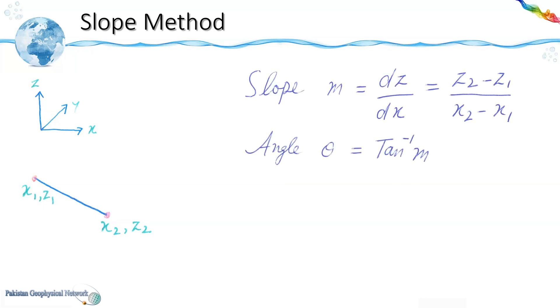By taking the differential dz by dx which is difference of z values divided by difference of x values. We can calculate the angle theta by taking tan inverse of m. And this angle theta is basically the dip.